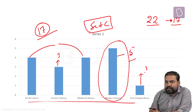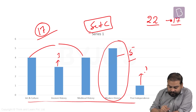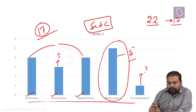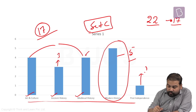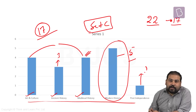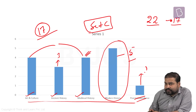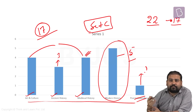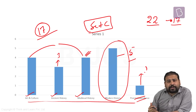The number of questions being asked from modern history has substantially reduced this year and has been equally transferred to art and culture, ancient and medieval. That means from this year onwards, we would have to give good attention to medieval as well. Post-independence, continuing the trend of last year, this year also has shown one question. Last year there were two questions from post-independence, one being from trade unions and another from arranging four events in the order in which they had happened.